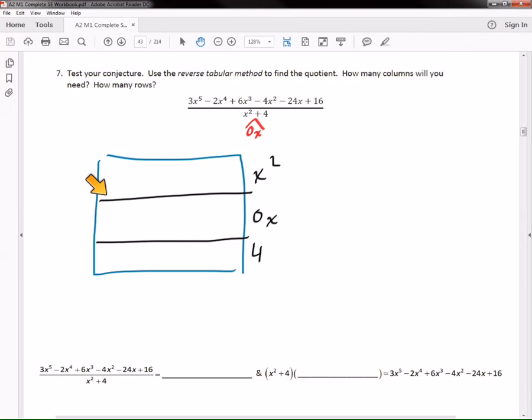And now I need my columns. Now in order to figure out how many columns I need, I look at how many terms I have in the numerator. The guy, the polynomial being divided. So I got 1, 2, 3, 4, 5, 6. And so that means I need six arrows.